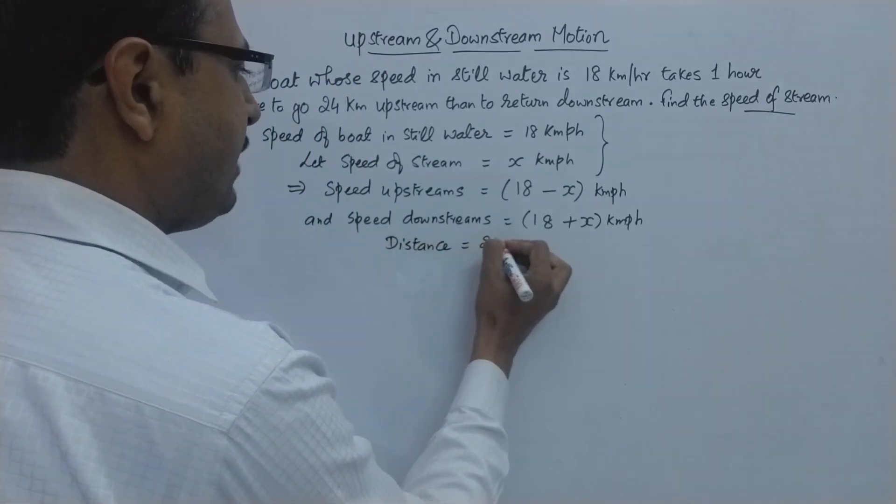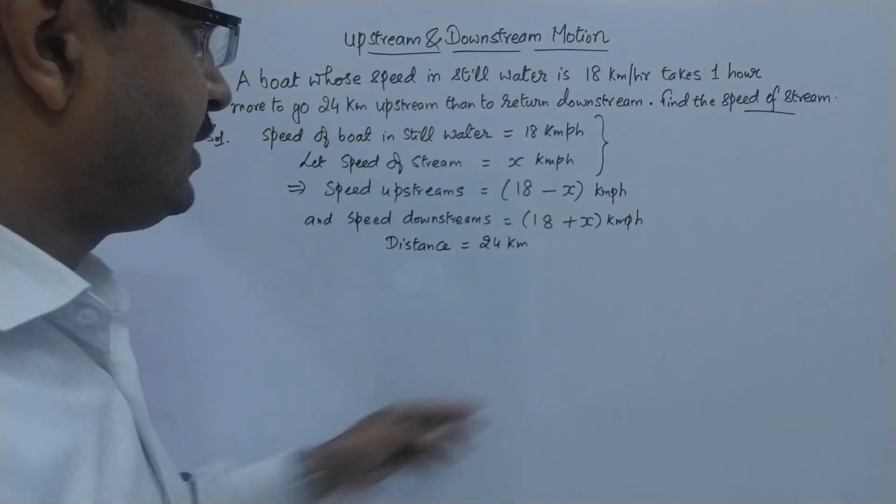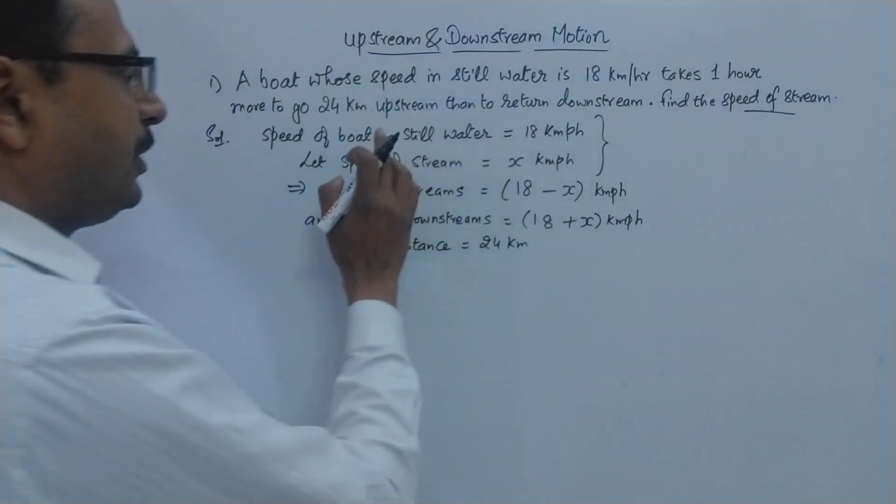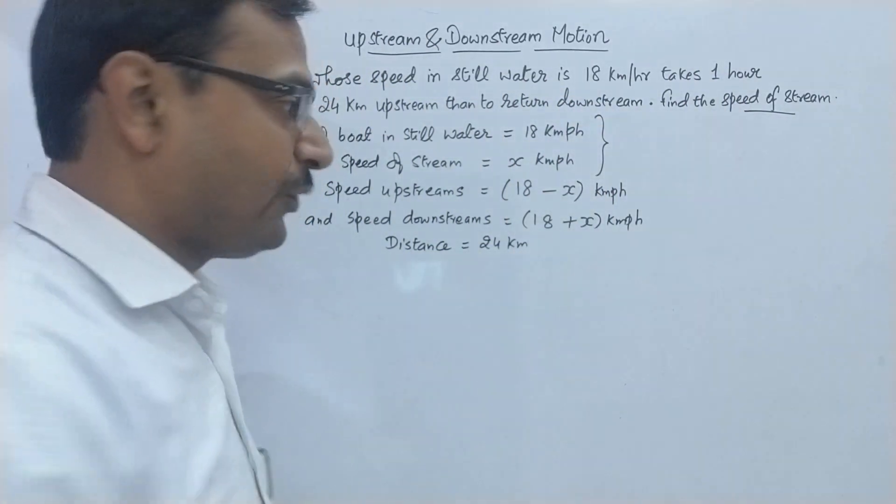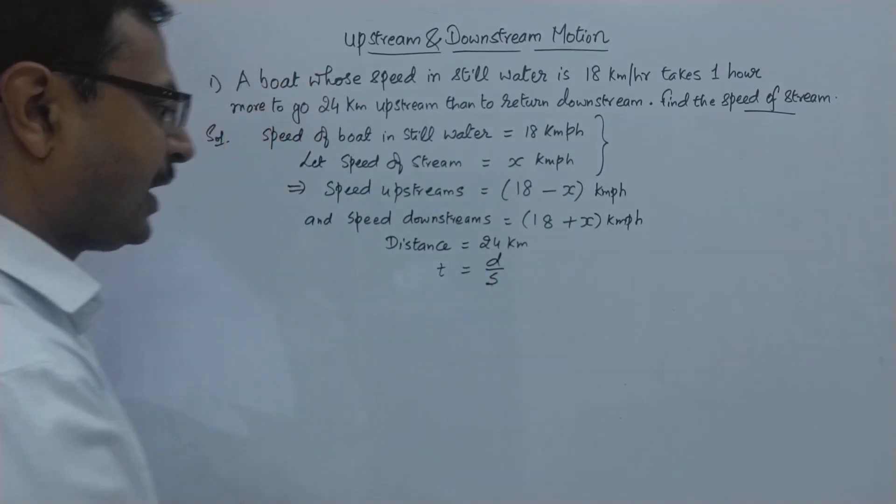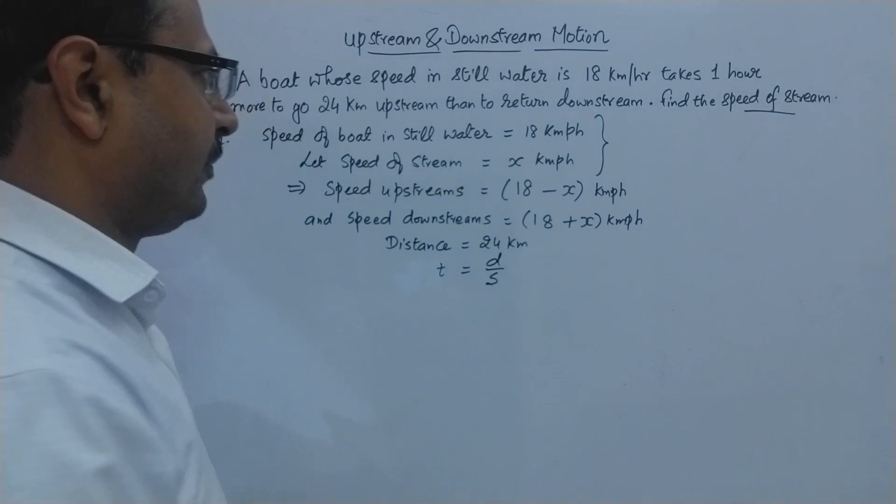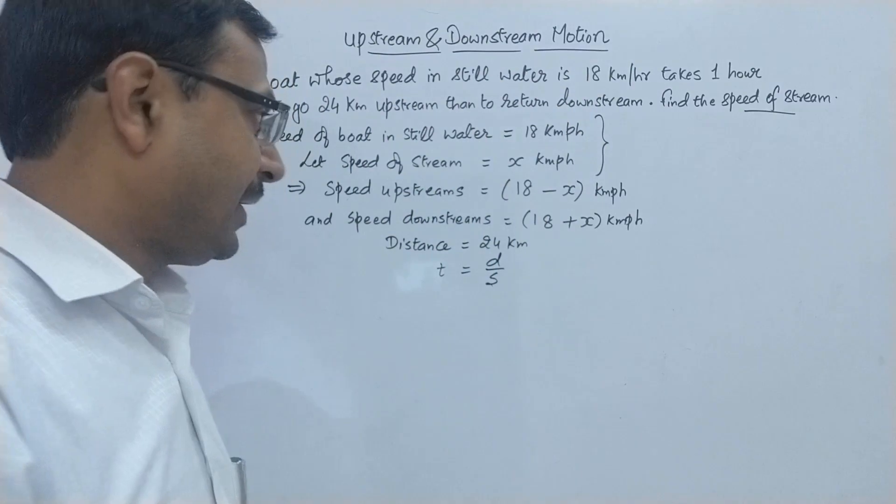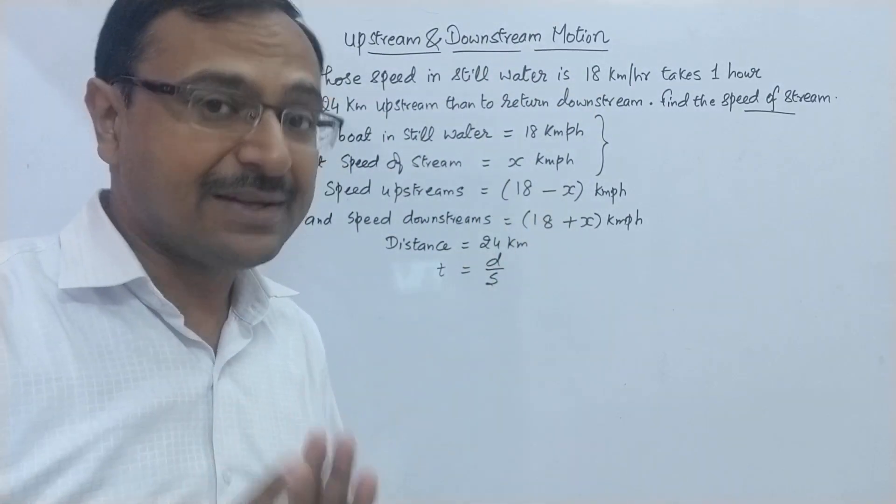Now distance is given in the question, it is 24 kilometers. So what formula we are going to use to find the speed of the stream? There is a difference of one hour between the time taken while going upstream and while going downstream. So we are going to use the formula of time which is distance upon speed. Now see which time will be more: when the boat is going upstream or when the boat is going downstream? Along the downstream the speed is more so the time taken is less.